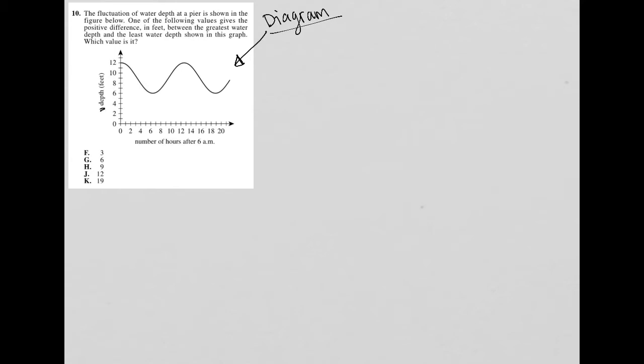So the y-axis is depth. The x-axis is number of hours after 6 a.m., so it's time. And we can see that at zero hours, our depth is at 12 feet and it goes down from there.